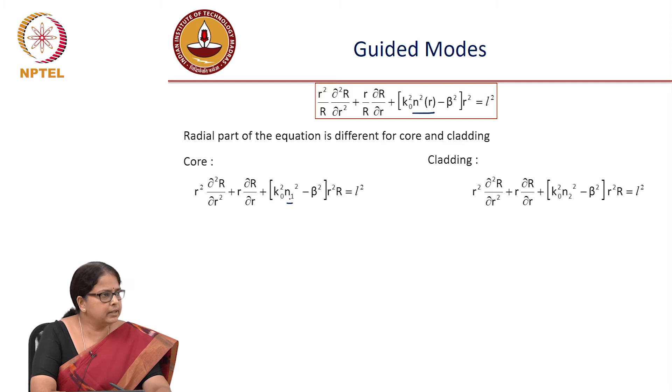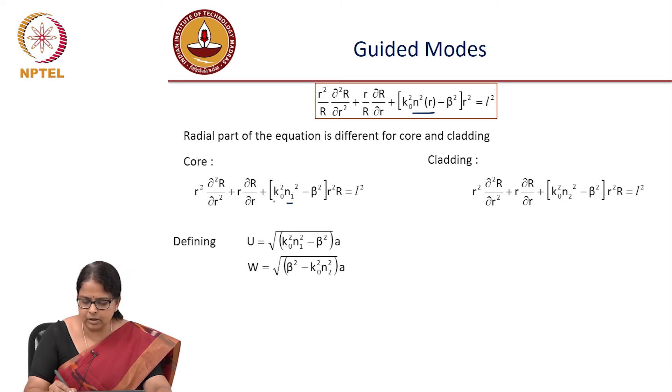And for convenience, we are going to redefine some of these parameters. So you define u as k naught square n1 square minus beta square times a, w as beta square minus k naught square n2 square, and this has to do with the allowed values of beta square so that your u and w, what is under root is always positive for the guided modes.